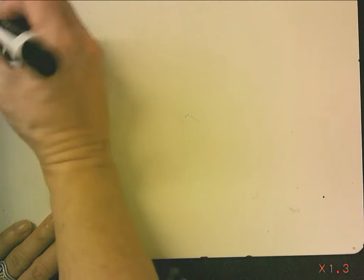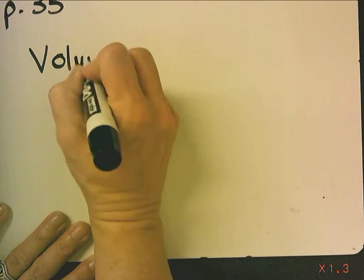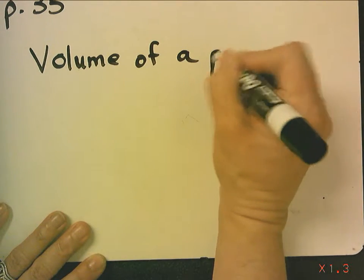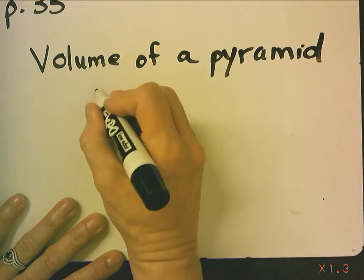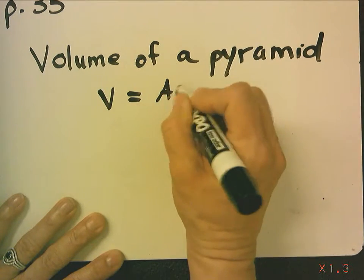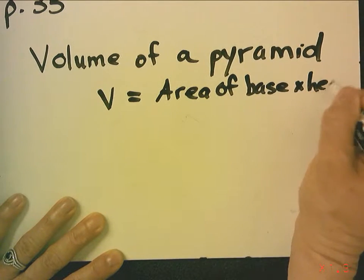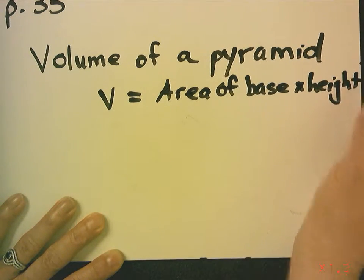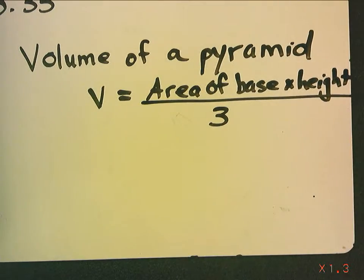Now, if you turn to page 35, we find that the volume of a pyramid. Now, remember, pyramids end in a point. They do not have congruent and parallel bases. So, volume of a pyramid equals area of the base times height, which is the same as a prism and cylinder, except this we divide by three.